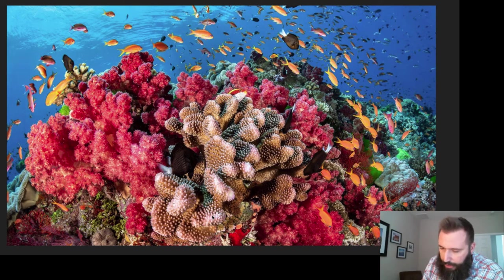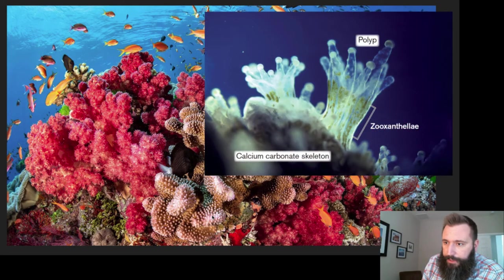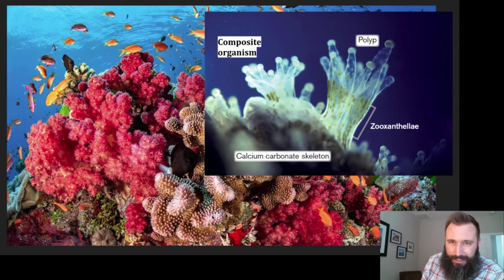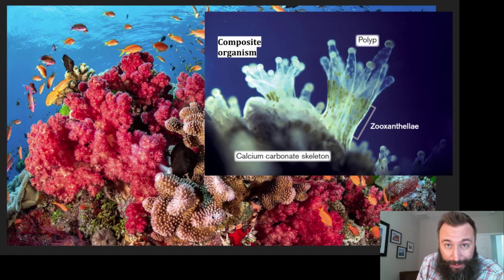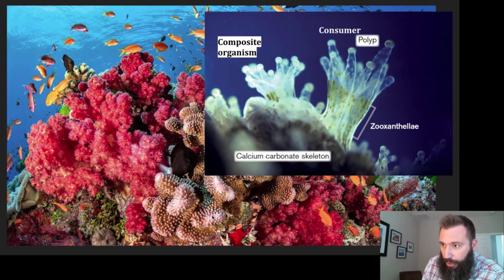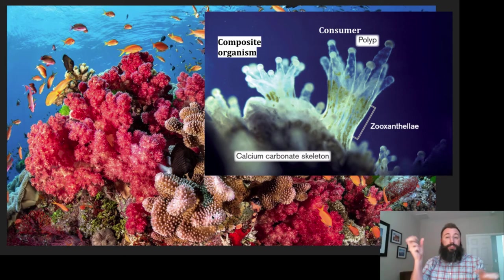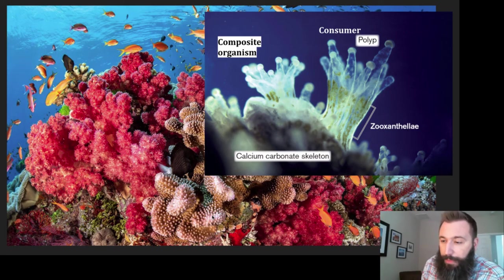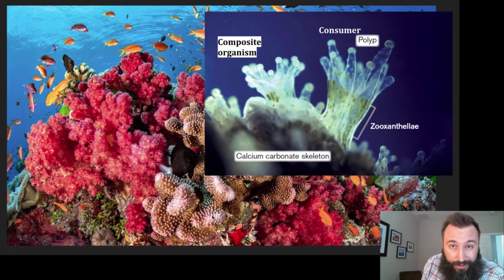These coral are really interesting individuals. This is a close-up view of one. They're actually a composite organism, meaning it's made up of two species in one. The coral polyp itself is a consumer — it's a heterotroph. With those tentacles, it's able to bring in dissolved nutrients into its body and use them to grow. So some of its food comes from that.